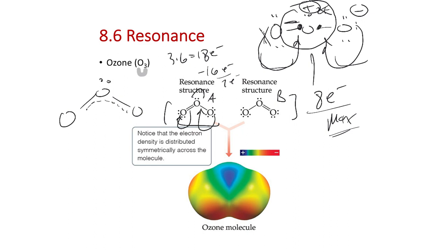If you think of averaging a double bond on one side and a single bond on the other, it averages out to about a three-halves bond order. A double bond has a bond order of two, a single bond has a bond order of one, so the bond in ozone is about 1.5 — right in between single and double. Single bonds are longer, double bonds shorter, so this bond should be somewhere in the middle between the O2 double bond distance and what we'd expect for a single O–O bond length.